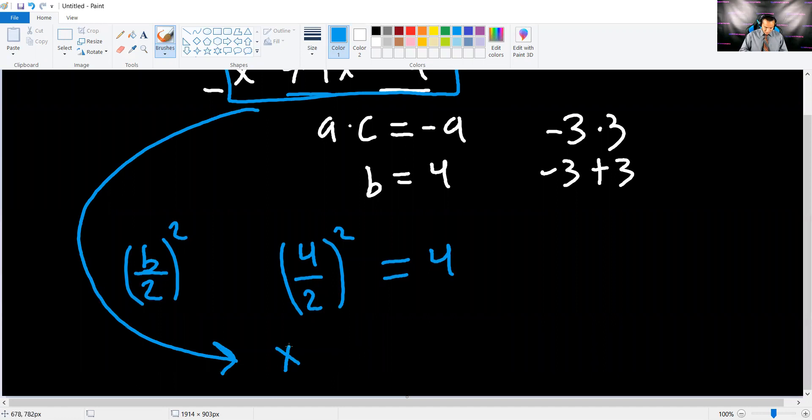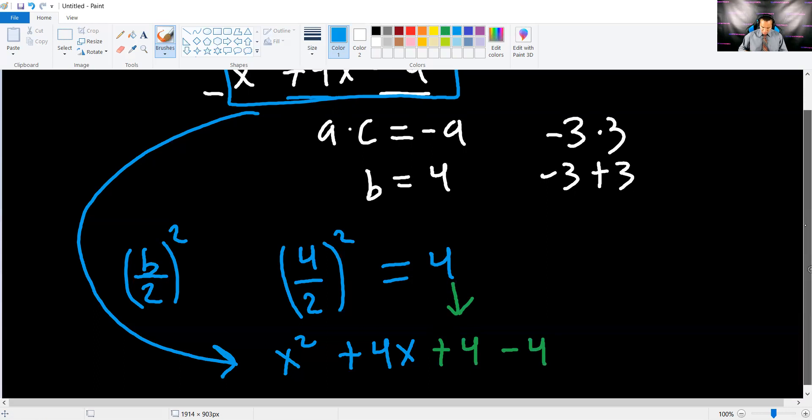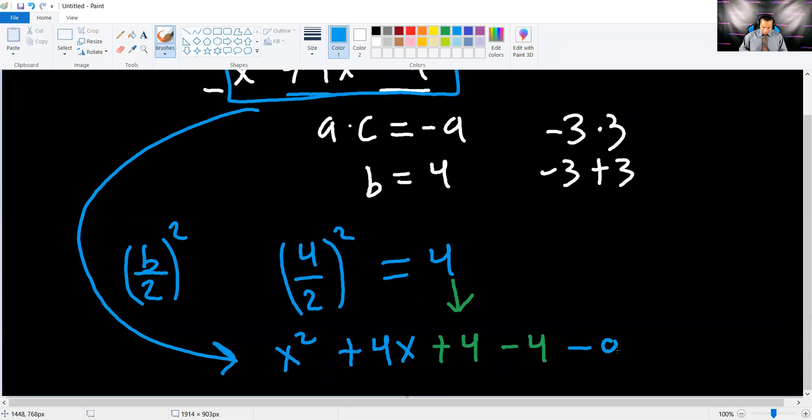And we get x squared plus 4x. And now look what I'm going to do. I'm going to add the 4 that I got here. But now I'm going to subtract the 4 again. And then I'm going to re-add the minus 9 that was at the end. Now look. I added 4 and took away 4. So I'm not changing the value of the actual expression. It's like this doesn't even exist.